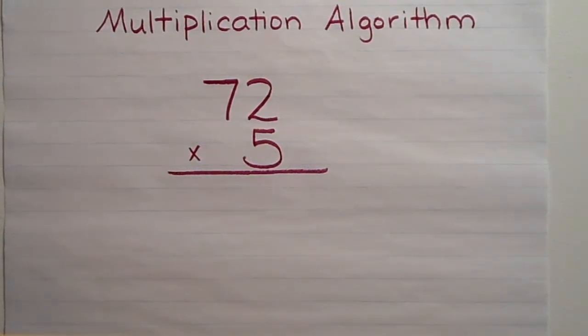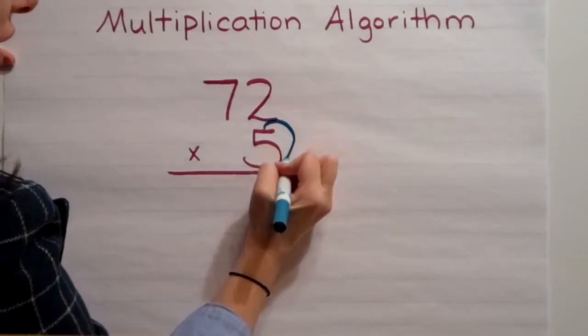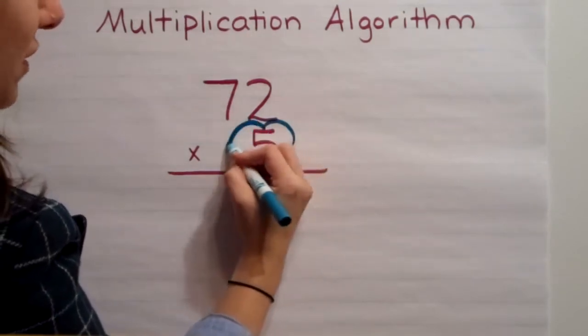Multiplication algorithm. When I'm multiplying with the algorithm, I always start with one thing. I put a heart around the bottom multiple.